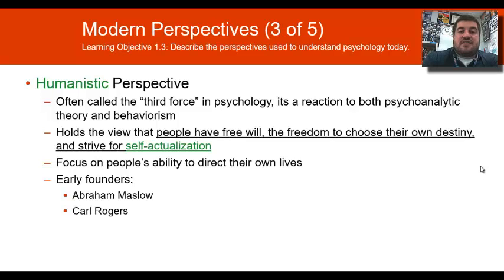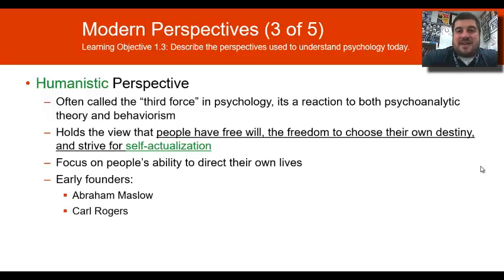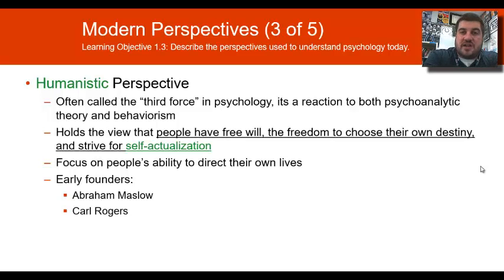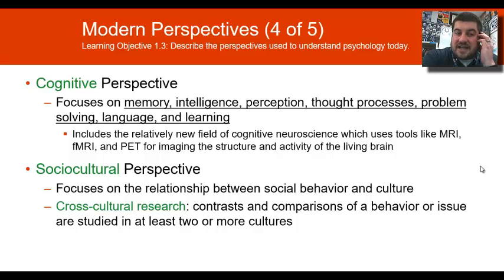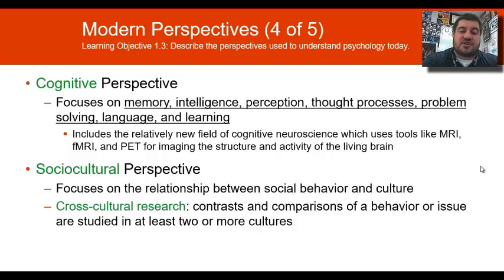The humanistic perspective is the third force in psychology, a reaction to both psychoanalytic theory and behaviorism, since both say you are a victim of your environment and childhood. Humanism holds that people have free will and the freedom to choose their own destiny, striving for self-actualization — reaching one's full potential. Early founders are Abraham Maslow and Carl Rogers. The cognitive perspective focuses on memory, intelligence, perception, thought processes, problem-solving, language, and learning.